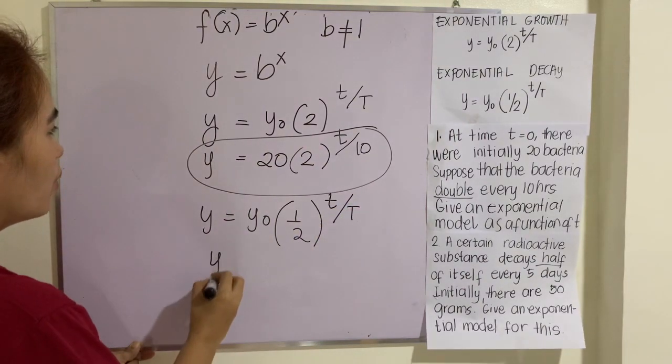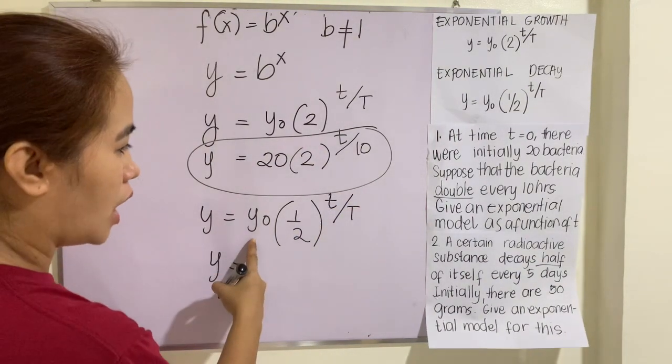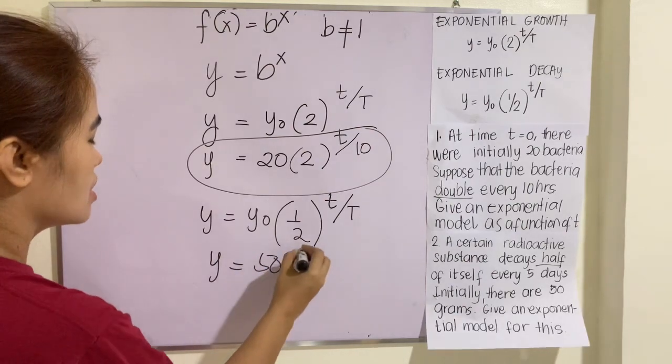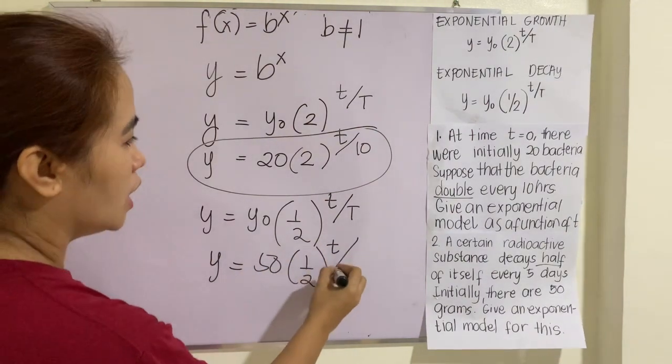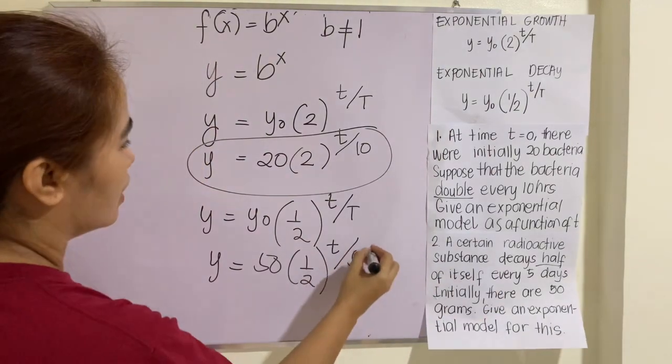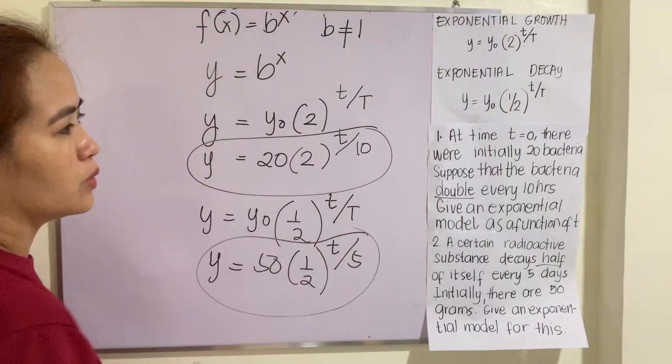So therefore, y is equal to initial. How many? 50 grams. So this is 1 half, small t, and then that is five days. So this one is the exponential model.